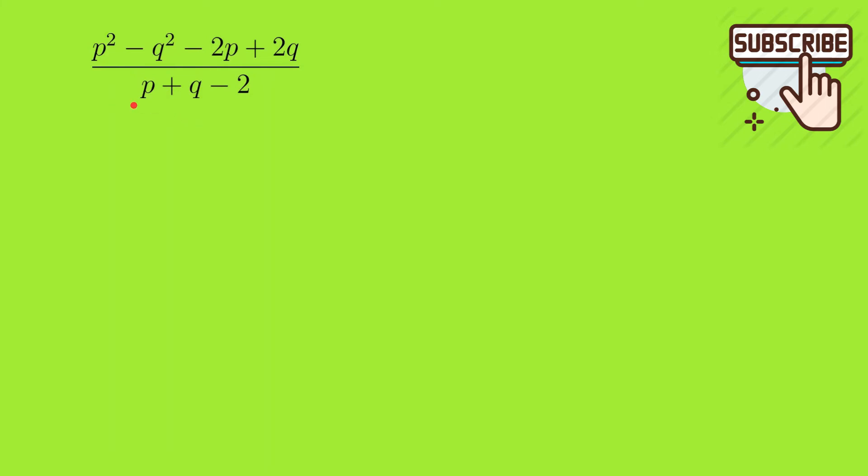p squared minus q squared we can factorize using a squared minus b squared identity, while minus 2p plus 2q we can factorize by taking minus 2 common. So we will have (p plus q) times (p minus q) equals p squared minus q squared, and minus 2 times (p minus q).